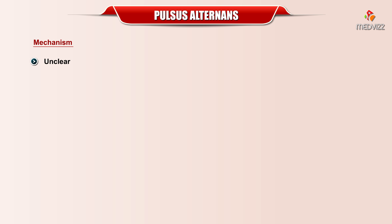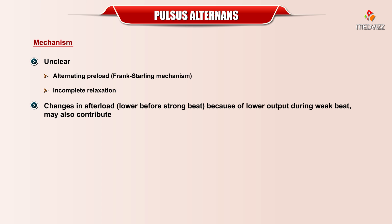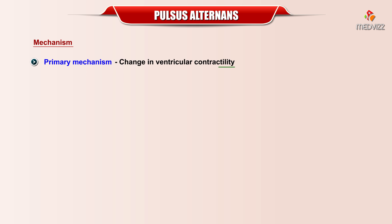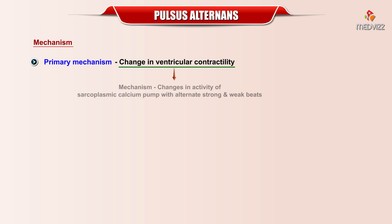The precise mechanism for pulsus alternans remains unclear. Alternating preload and incomplete relaxation have been proposed as mechanisms. Changes in the afterload, which is lower before the strong beat because of the lower output during the weak beat, may also contribute. It has also been suggested that a change in ventricular contractility is the primary mechanism. Changes in the activity of the sarcoplasmic calcium pump with alternate strong and weak beats appears to be the mechanism for changes in contractility.